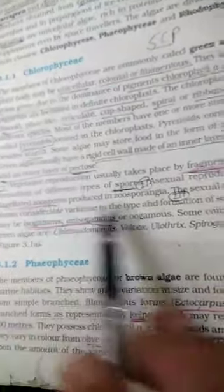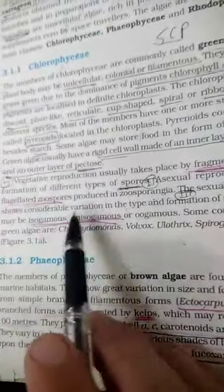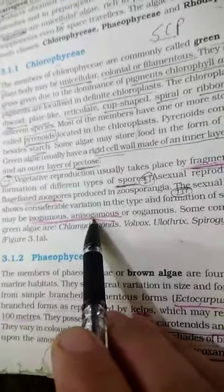Vegetative reproduction by fragmentation and asexual reproduction by the flagellated zoospore. And sexual reproduction by the gametes, and gametes can be isogamous or anisogamous. These terms I have already discussed with you.